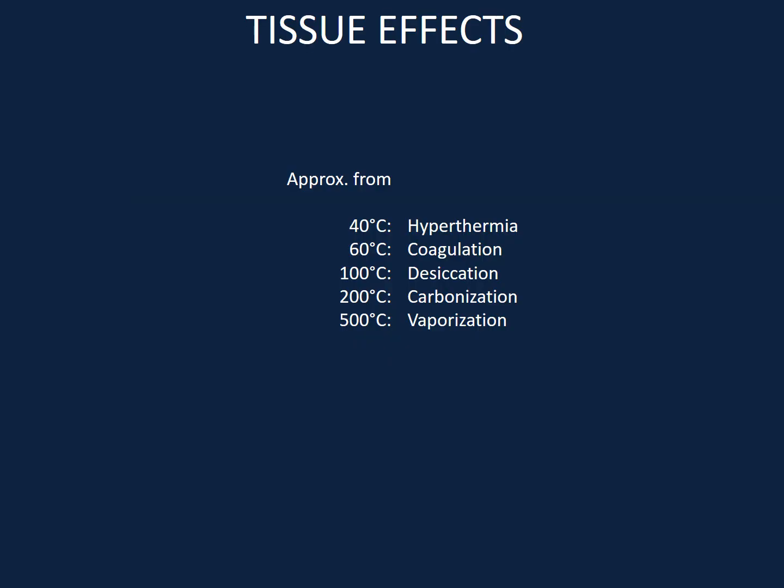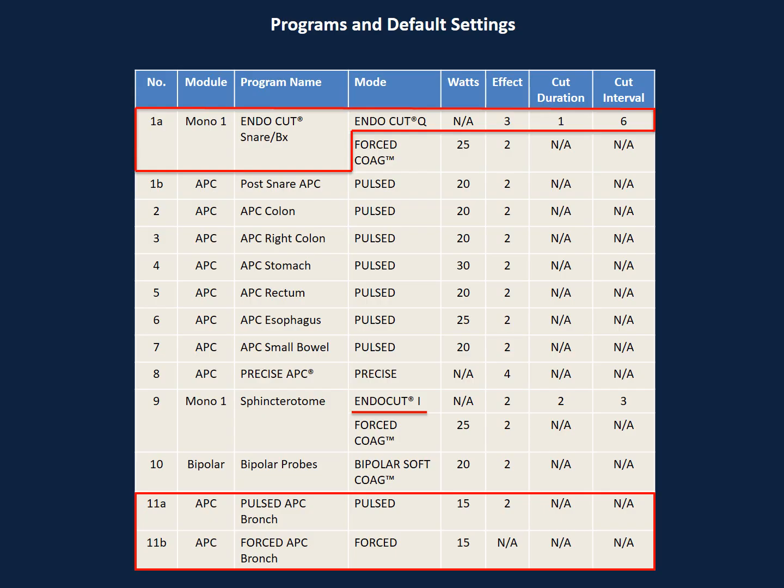The degree of thermal effects depends on several factors: the application duration, the power setting, the probe distance, and other factors like the type of tissue. The programs used in the airways are the EndoCut and the argon plasma coagulation. Their use is based on what we are trying to achieve — cut, coagulate, or both. The default settings are based on evidence-based practices; however, the physician is responsible for choosing the appropriate equipment, instrumentation, and settings to effectively treat each patient. The lowest possible setting should be used to achieve the desired end effect.